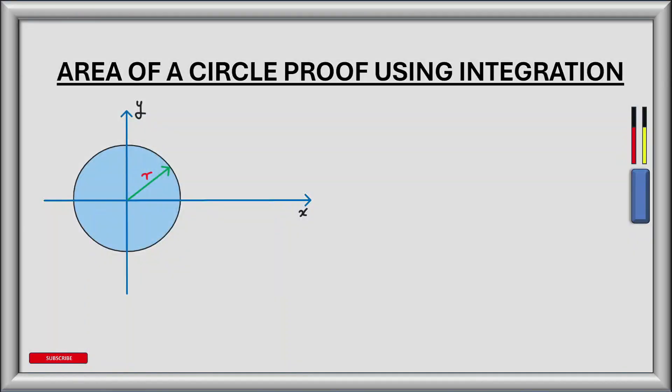Now we know that the area of a circle, denoted by A, is equal to pi r squared. How do we prove that this is true? We're going to try and prove this using integration. So let's start with the equation of a circle, which is y squared plus x squared equal to r squared.